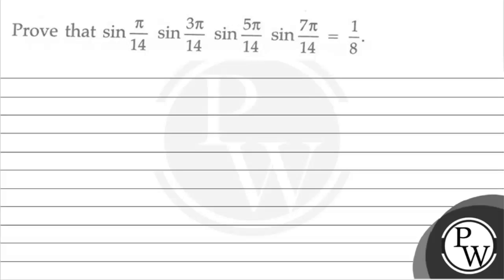Hello students, let's see the question. The question says: prove that sin(π/14) · sin(3π/14) · sin(5π/14) · sin(7π/14) is equal to 1/8.